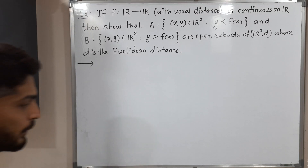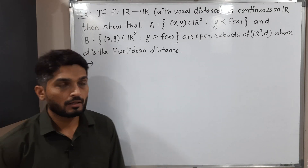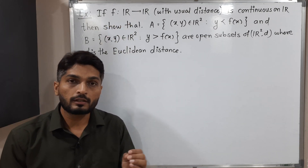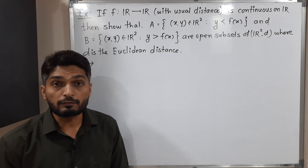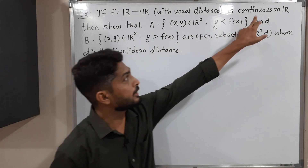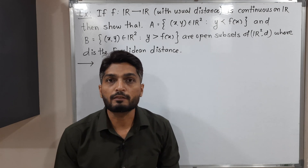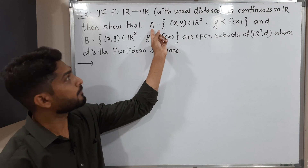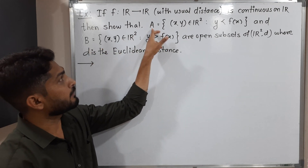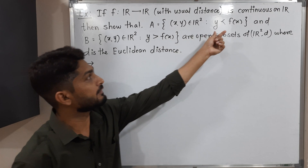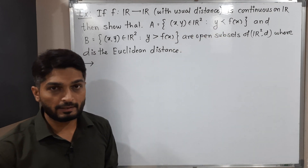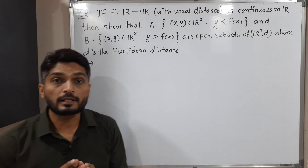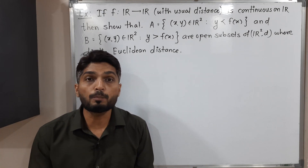Hi everyone. In this video we are going to discuss this example. We have a function f which is from ℝ to ℝ, where ℝ is with the usual distance. The given information is that f is a continuous function. With the help of that function they have defined two sets A and B. Set A is a subset of ℝ² defined as f(x) > y, and in B we have the exactly opposite: y > f(x). Our target is to prove A and B are open sets.